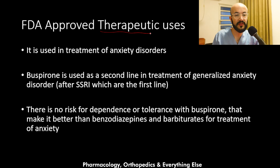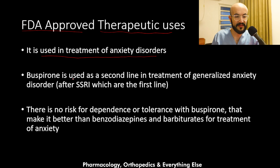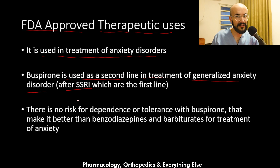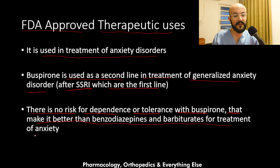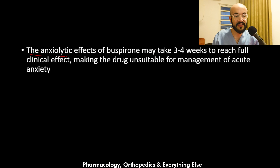The FDA-approved therapeutic uses of buspirone include treatment of anxiety disorders. For example, it is used as a second-line treatment for generalized anxiety disorder, after selective serotonin reuptake inhibitors, which are the first line. There is no risk for dependence or tolerance with buspirone, which makes it better than benzodiazepines and barbiturates for anxiety treatment. However, the anxiolytic action may take three to four weeks to reach full clinical effect, making the drug unsuitable for management of acute anxiety.